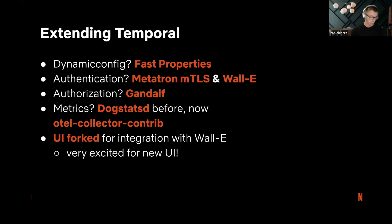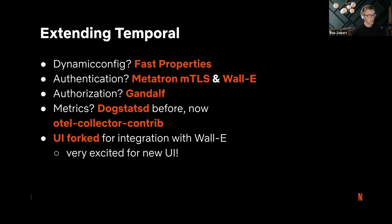As far as the Temporal service goes, we've added dynamic config integration with a service called Fast Properties. It's a small service that runs on Cassandra that lets us add dynamic config at various constraint levels — all the way from a global property that affects every application inside Netflix down to individual instances. We can target the constraints however we want, and that maps very nicely into the dynamic config extension point that Temporal has.